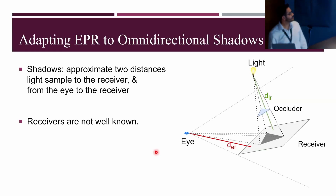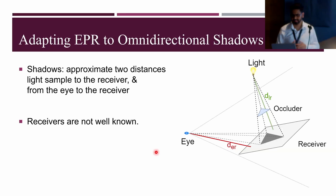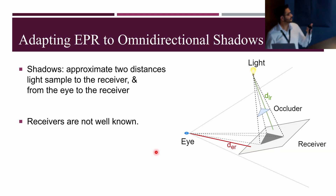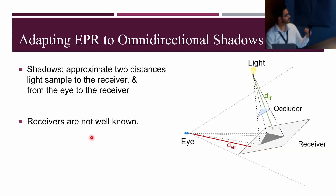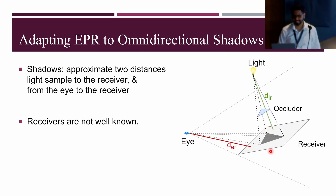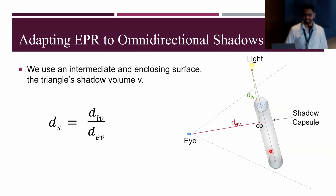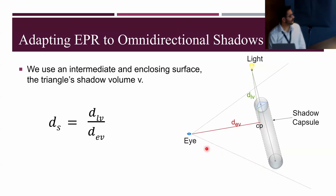We extended EPR to omnidirectional shadows. In reflections, we estimate sampling rate by approximating the distance reflected from triangle via reflector to eye. In shadows it's not that simple — we need to approximate two distances: from the light sample to the receiver, and from the eye to the receiver. Since receivers are not well-known in dynamic scenes, we use an intermediate enclosing surface called a triangle shadow capsule, computing distances from eye and light sample to the capsule and using their ratio to determine sampling rate.